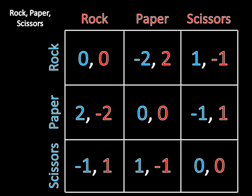Imagine I make a minor modification: instead of getting one and negative one for a paper-beats-rock outcome, the winner playing paper gets two, and the loser playing rock gets negative two. So it's really good if you're playing paper against rock, but really bad if you're playing rock against paper. That's going to completely change things around.